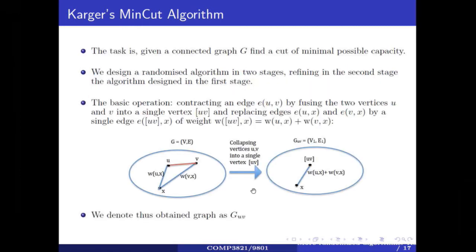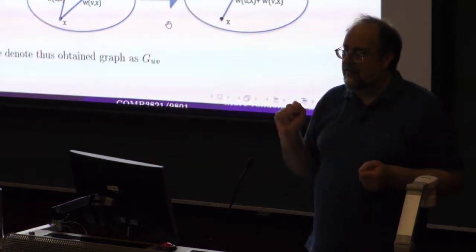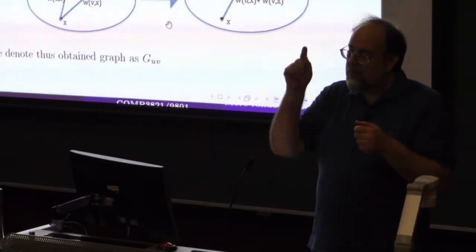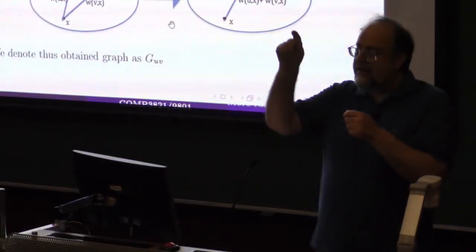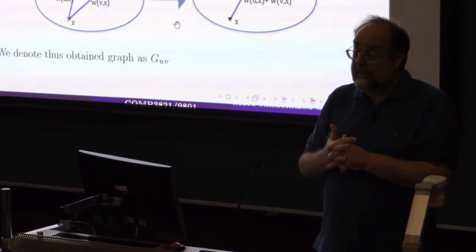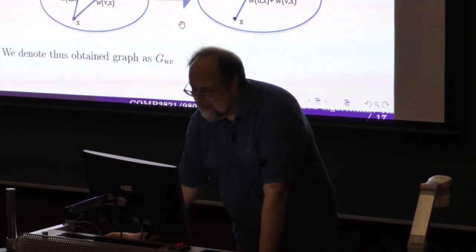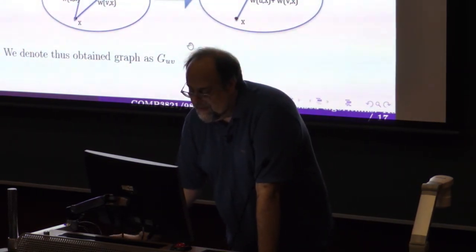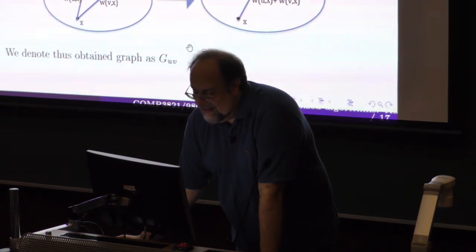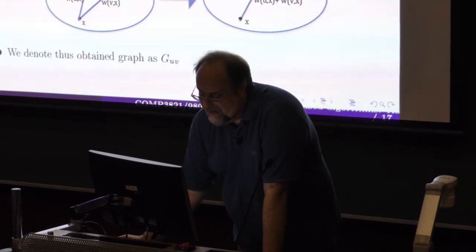The idea is: what you are going to do is keep collapsing edges until you get only two vertices. And you want to claim that the capacity of the min cut is precisely the capacity of the single edge left. It looks like a tall proposition, but we will see how it is made to work. I really admire this algorithm very much — Karger must be a very smart guy.